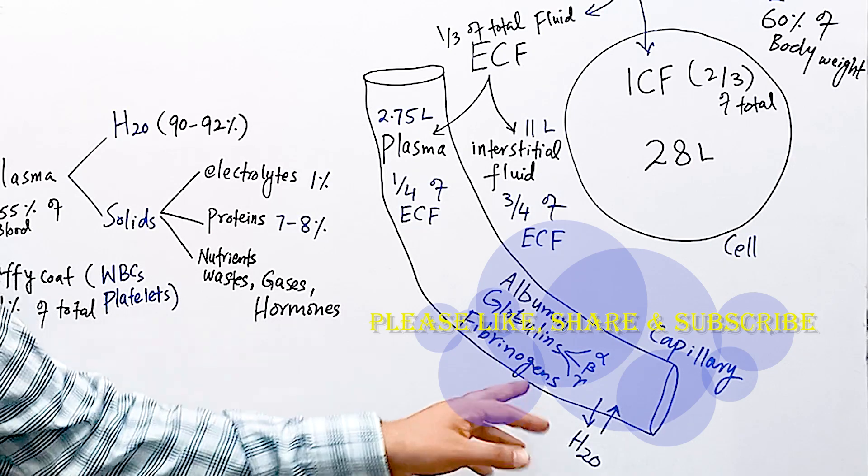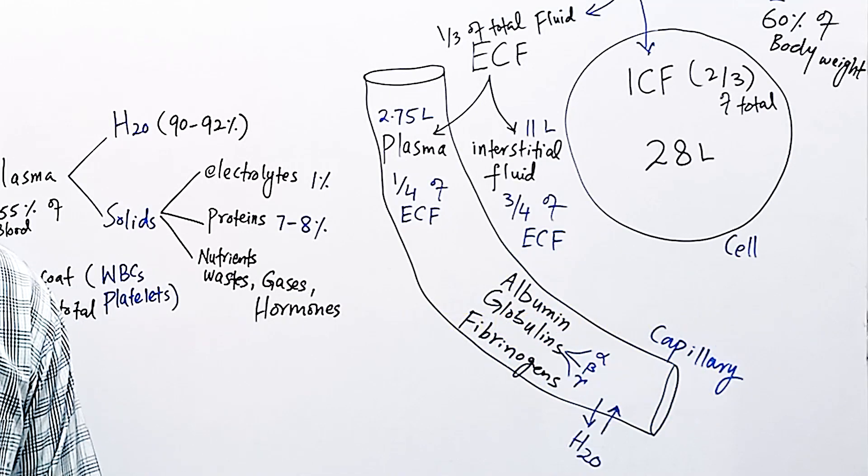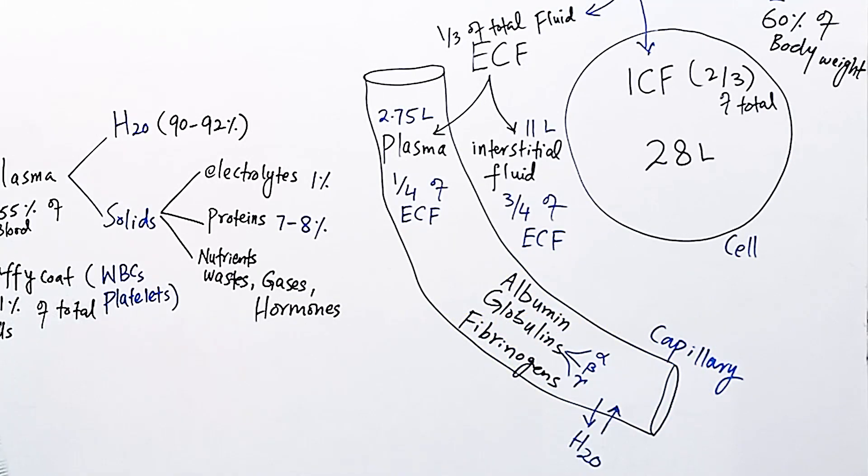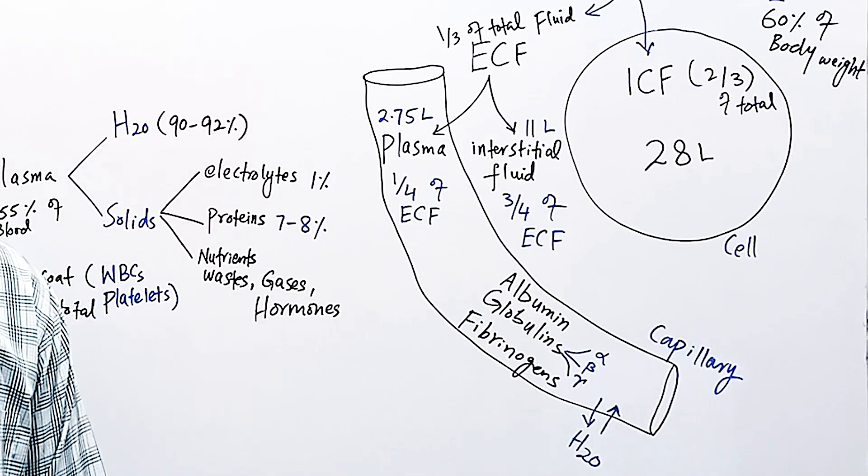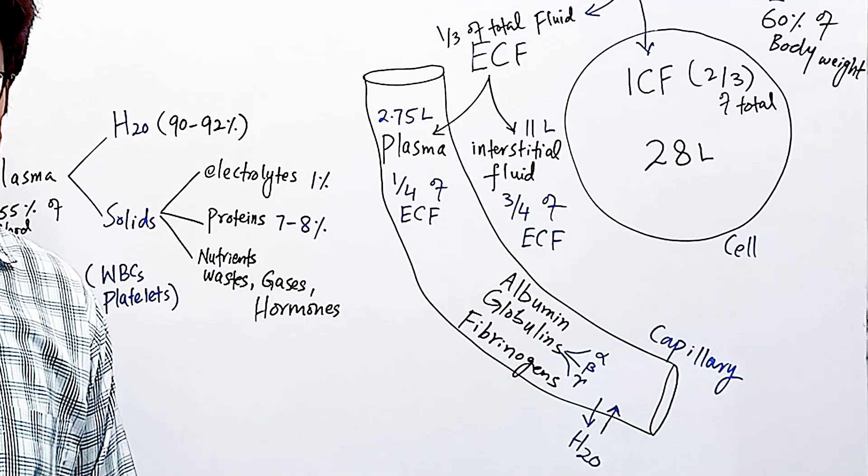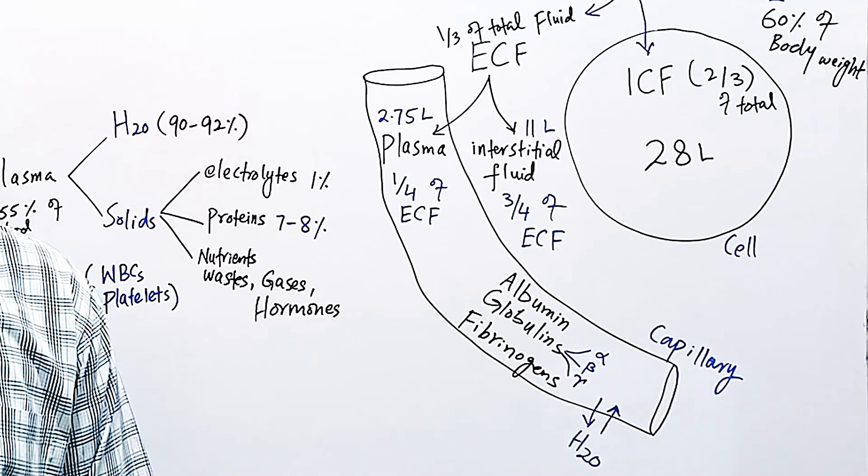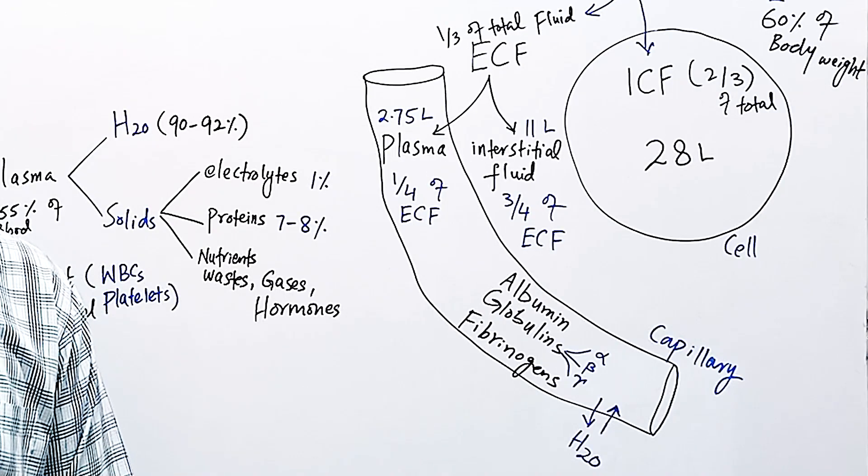Gamma globulins are also called antibodies or immunoglobulins and they provide resistance against infections. Some globulin proteins in plasma are precursors of active substances. For example, an alpha globulin called angiotensinogen is an inactive substance converted into angiotensin 1 and then 2, which is very important for salt balance and blood pressure regulation.